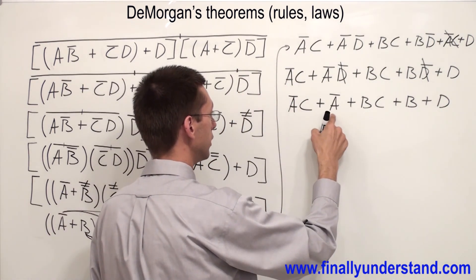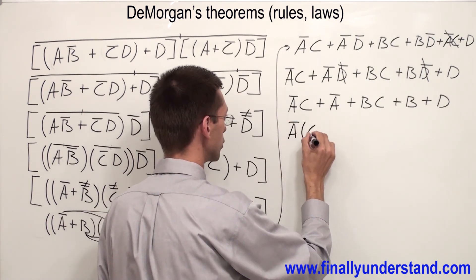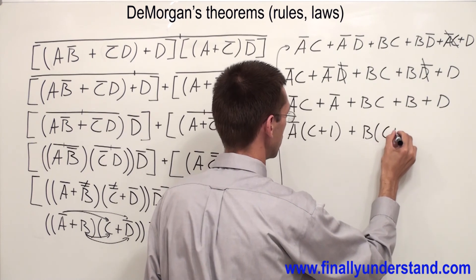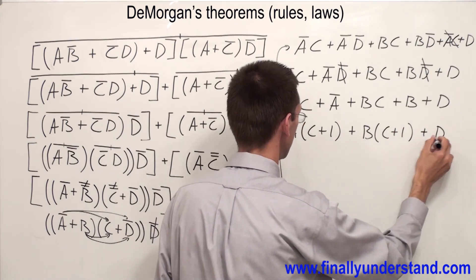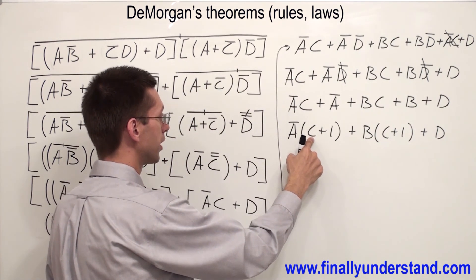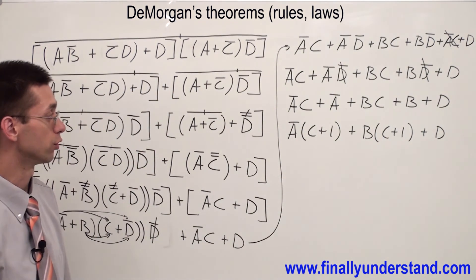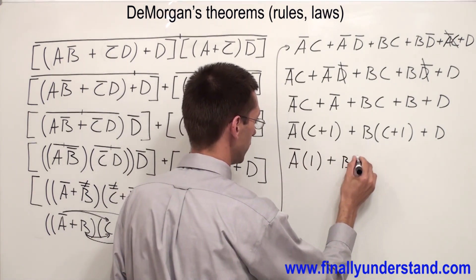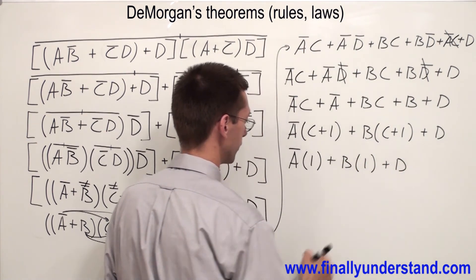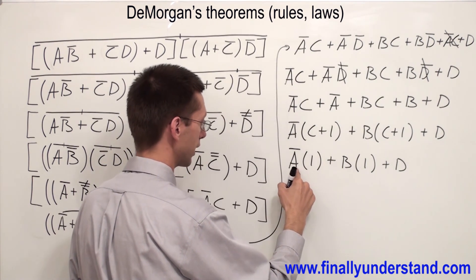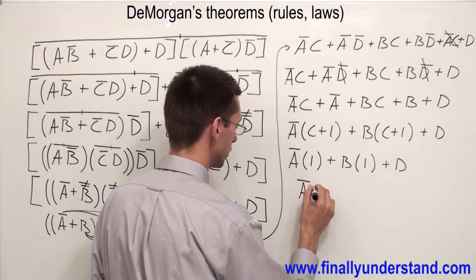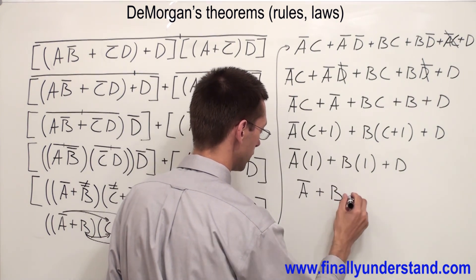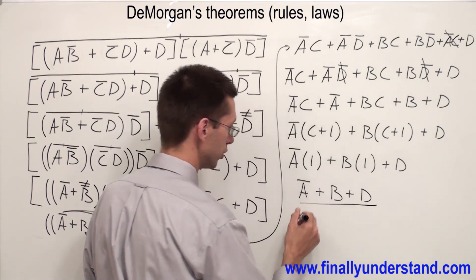Now, because I have Ā and Ā, I can factor out Ā and I'm going to have (C OR 1). And I can factor out B and get (C OR 1), OR D. Any variable ORed with 1 gives me always 1. That's why I'm going to have Ā times 1 OR B times 1 OR D. Ā AND 1 is Ā, B AND 1 is B, so the final solution is Ā OR B OR D.